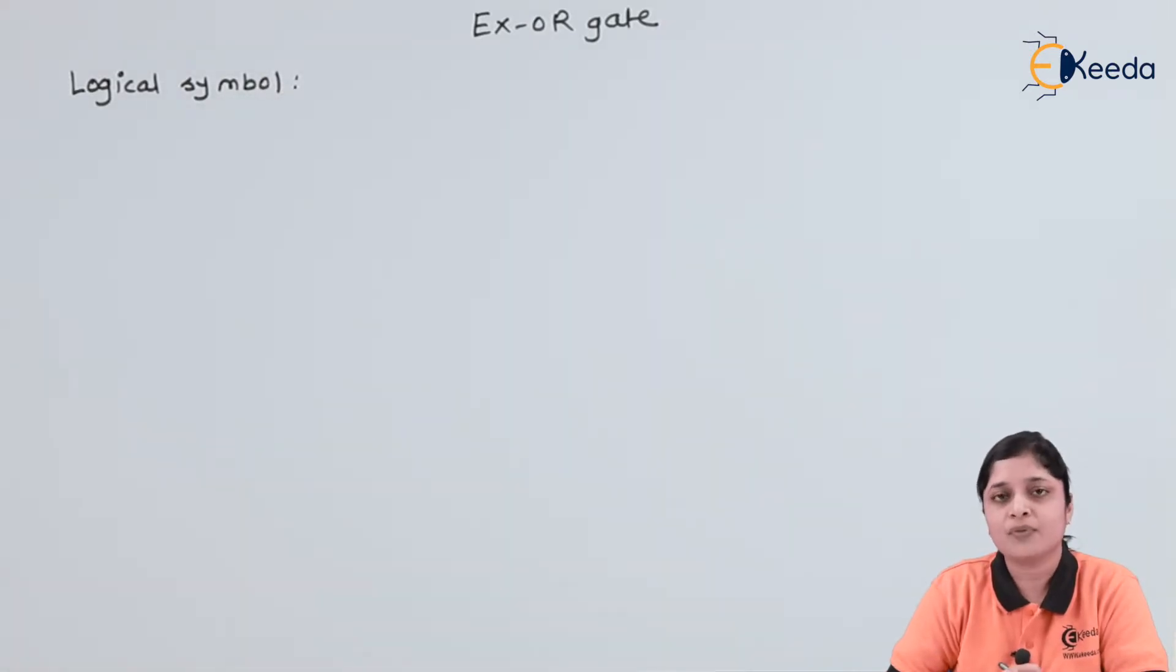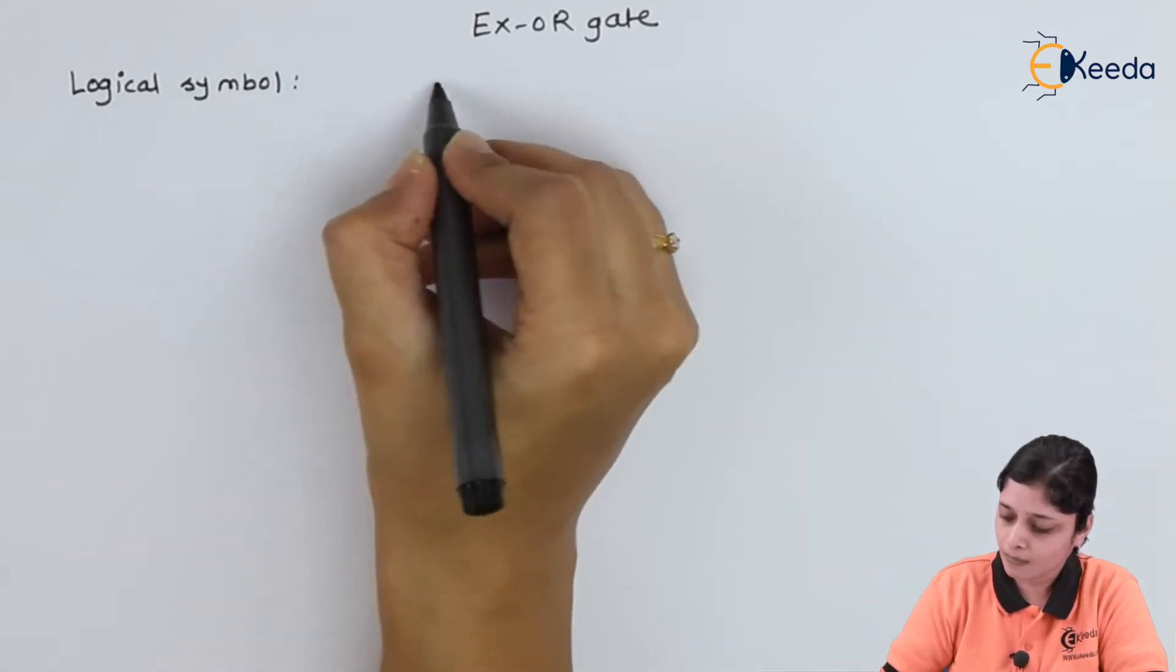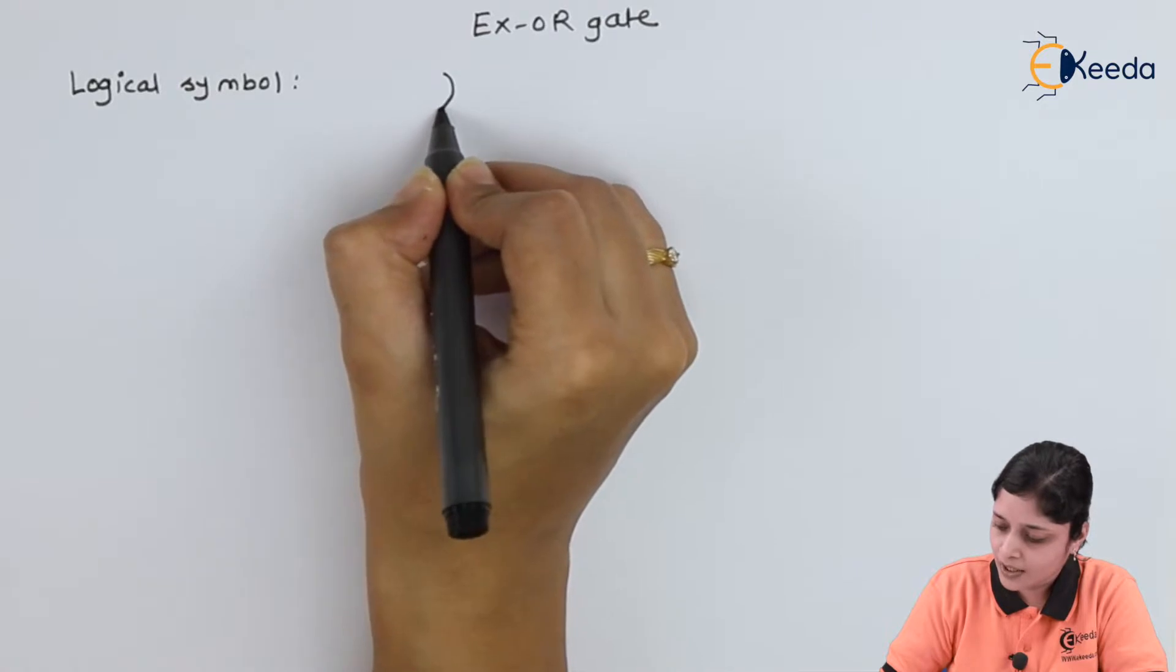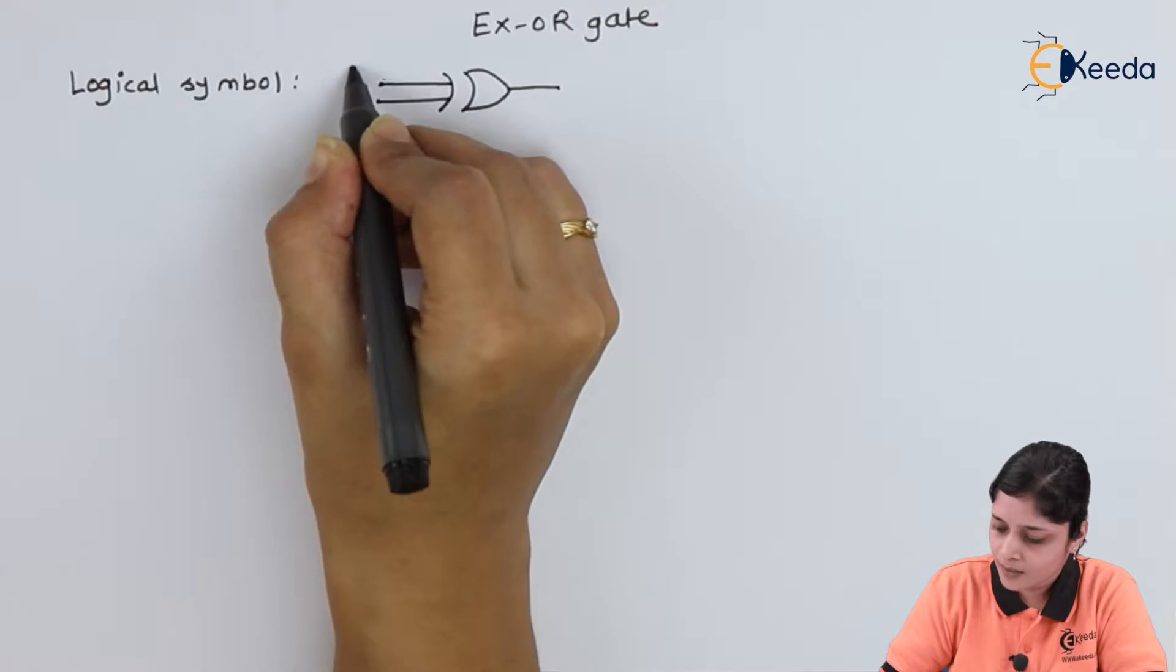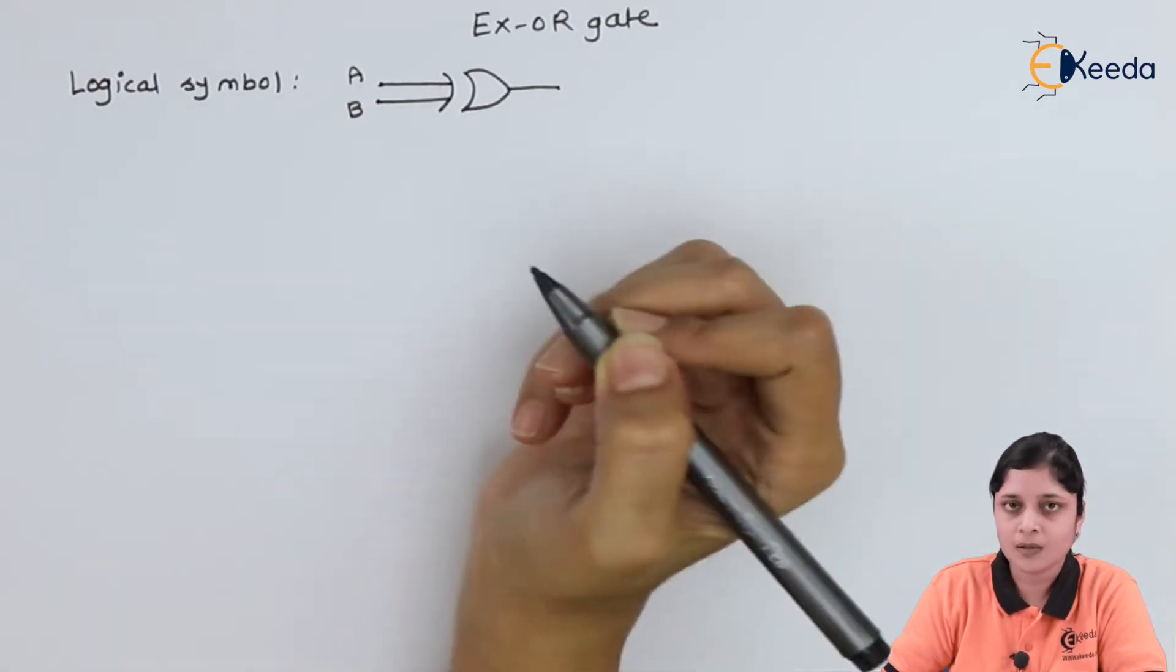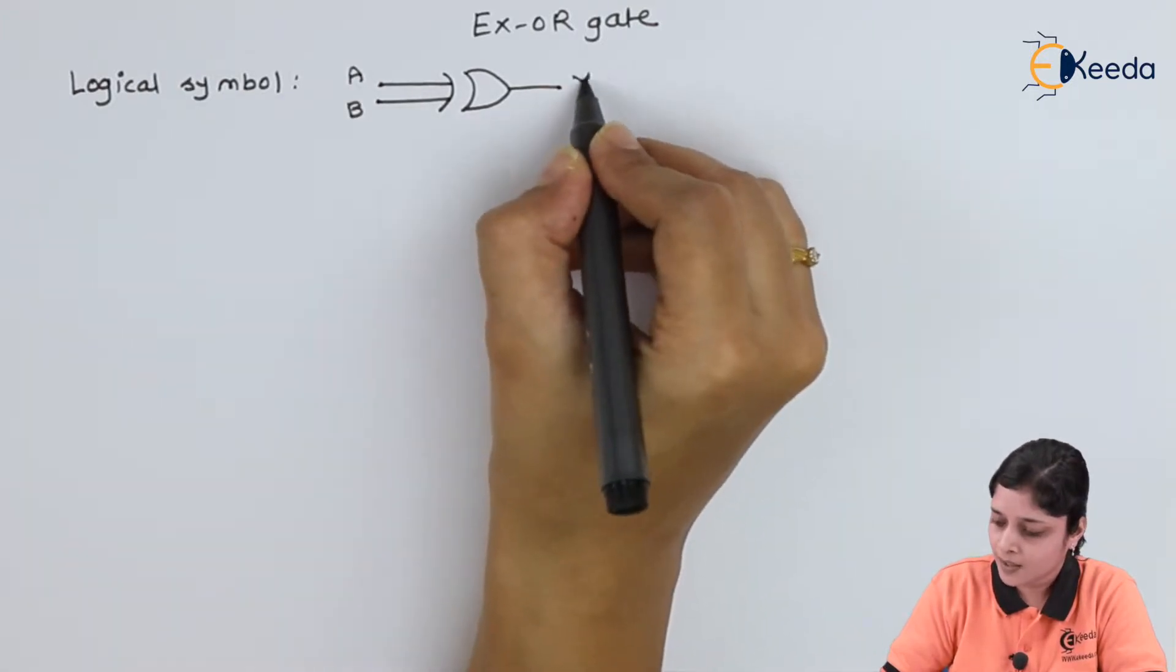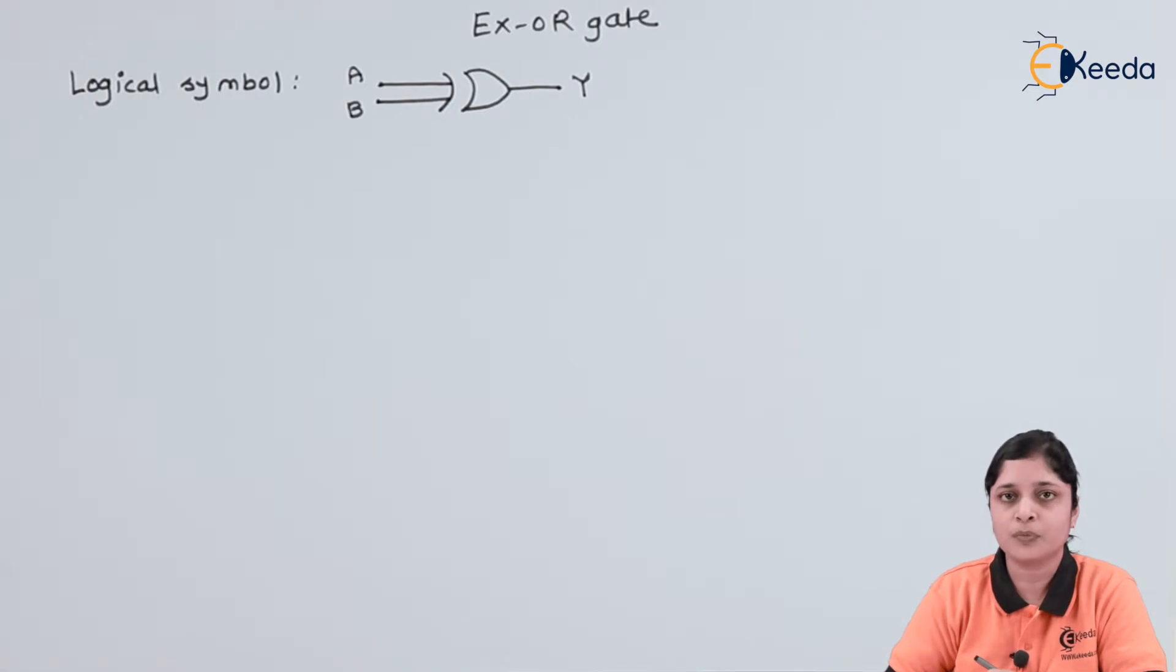XOR gate is a type of derived gate. XOR and XNOR are the types of derived logical gates. The symbol for XOR gate is like this. This is your input side and Y is your output side.